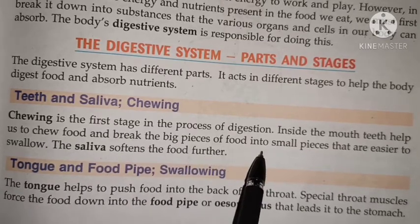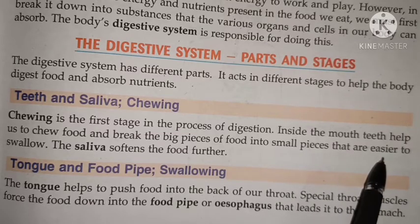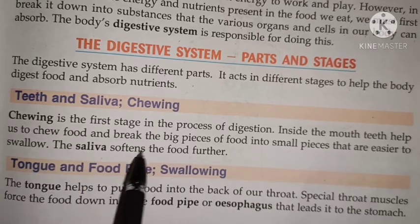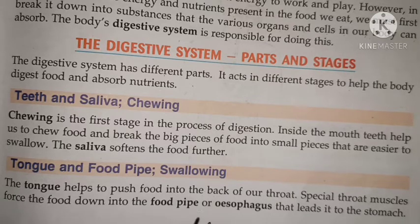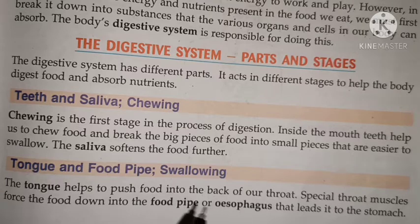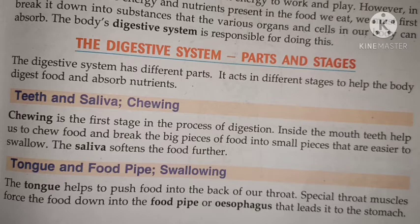Inside the mouth, teeth help us to chew food and break the big pieces of food into small pieces that are easier to swallow. The saliva softens the food further. Hamare mouth ke andar teeth hote hain — teeth humein jo bhi khaana khaate hain usse chabane mein help karte hain. Bade bite ko chabate hain toh woh chhote-chhote tukdon mein ho jaata hai, jisse nigalne mein aasani hoti hai. Aur saliva — the water in our mouth — is mixed with food to make it soft.